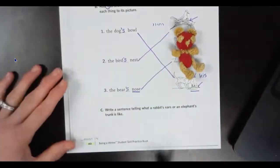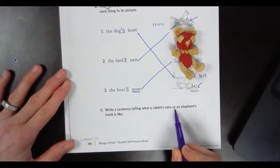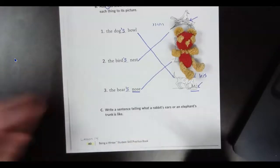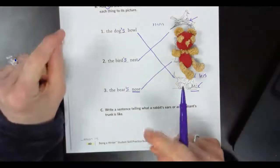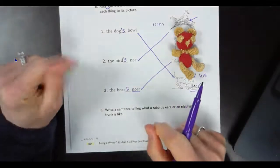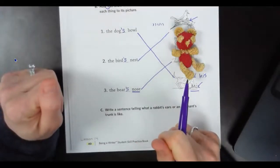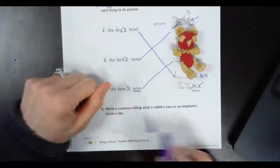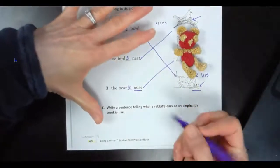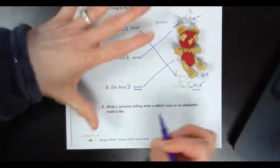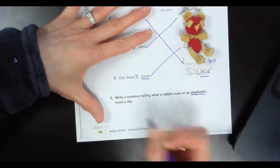All right, and the last thing it asks us to do is write a sentence telling what a rabbit's ears or an elephant's trunk is like. Hmm. When I think of an elephant, I think something about its ears. I also think something about its trunk. Me too. I always think of how long an elephant's trunk is, so I'm going to say the elephant's trunk is long. I think that sounds like a great sentence. What do you think? And I know how to spell elephant because it's right here.